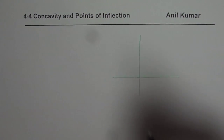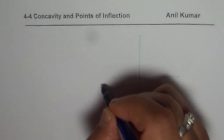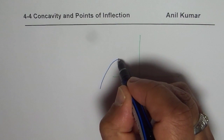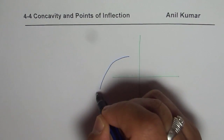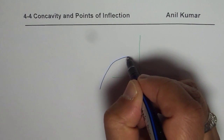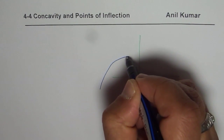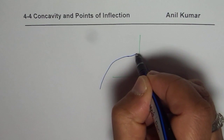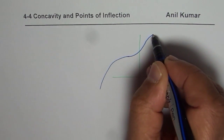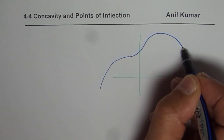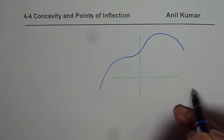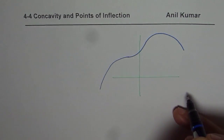Let us say we have a graph of the function which is concave down in one portion, and then at a certain point it goes concave up, and then again it decreases. So we have a graph that looks kind of like this.